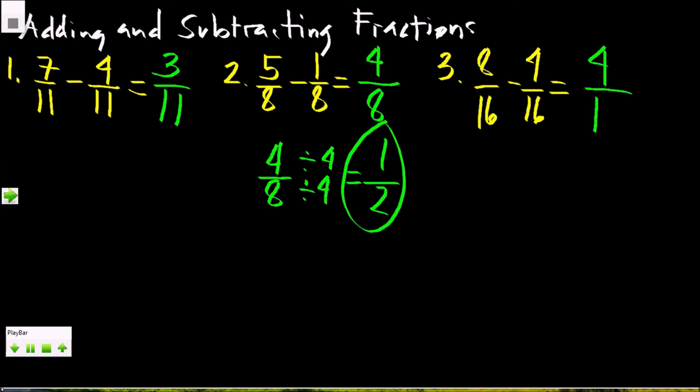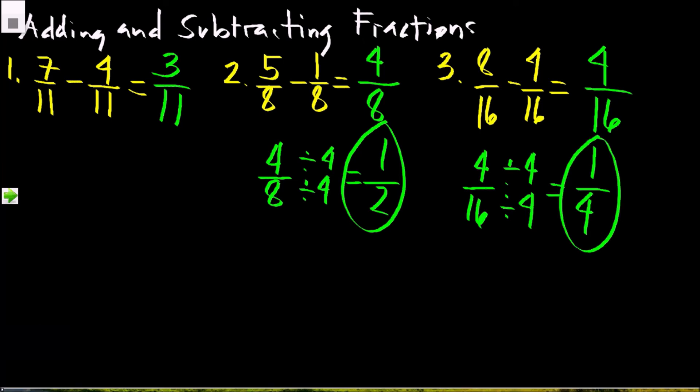8 minus 4 is 4, copy the common denominator, which is 16. 4/16 can be simplified by the greatest common factor number 4. 4 divided by 4 is equal to 1, then 16 divided by 4 is equal to 4. So the answer is 1/4.